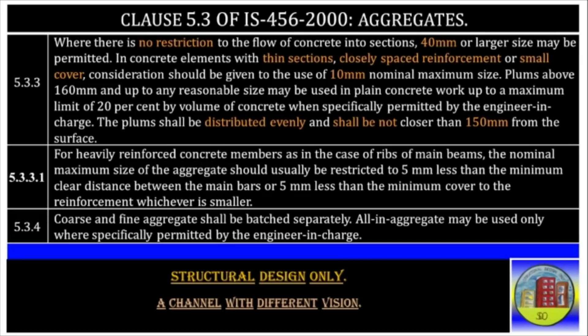Plums above 160 mm and up to any reasonable size may be used in plain concrete work up to a maximum limit of 20% by volume of concrete when specifically permitted by the engineer in charge. The plums shall be distributed evenly and shall not be closer than 150 mm from the surface. 5.3.3.1: For heavily reinforced concrete members, as in the case of ribs or main beams, the nominal maximum size of aggregate should usually be restricted to 5 mm less than the minimum clear distance between the main bars, or 5 mm less than the minimum cover to the reinforcement, whichever is smaller. 5.3.4: Coarse and fine aggregates shall be batched separately; all-in aggregate may be used only when specifically permitted by the engineer in charge.